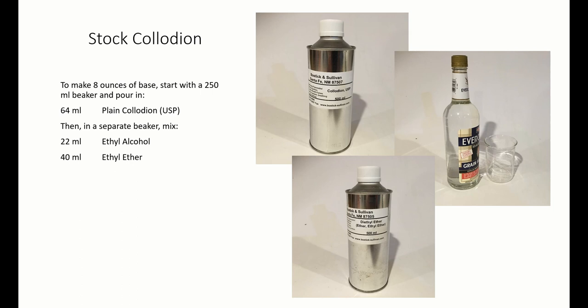mix 22 milliliters of ethyl alcohol, which is 180 proof or higher—this is important—and 40 milliliters of ethyl ether. Pour this into the collodion and stir with a glass rod. Transfer this to a glass bottle and cap tightly.